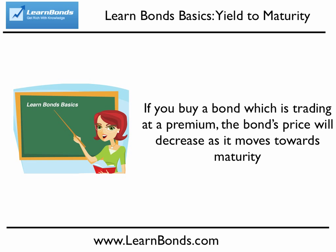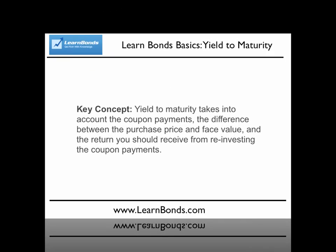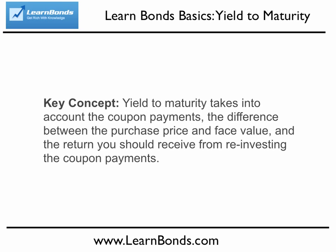As these differences are often significant, they should be included in the overall return you receive when investing in a particular bond. This is where yield to maturity comes into play. Key concept: yield to maturity takes into account the coupon payments, the difference between the purchase price and the bond's face value, and the return you should receive from reinvesting the coupon payments.